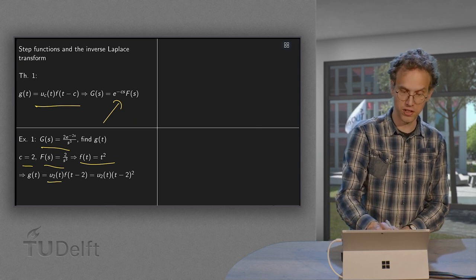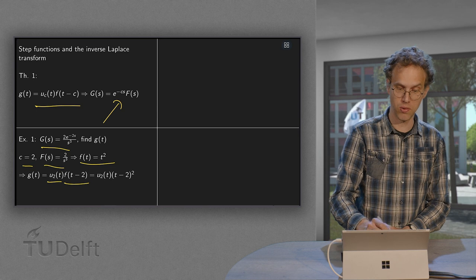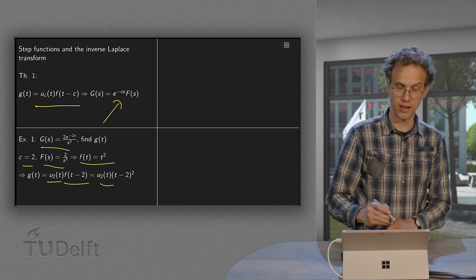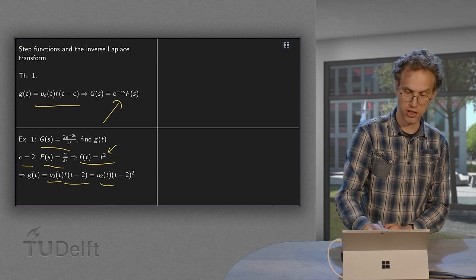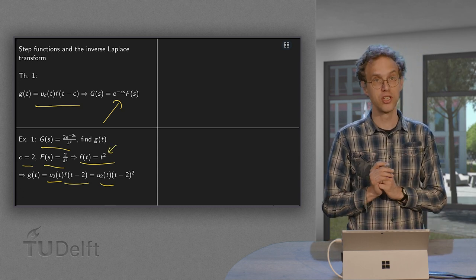So we get u2 of t, f of t minus 2. So we get a u2 of t, and we put the t minus 2 in the spot of t over here. So we get t minus 2 squared. So there we are.